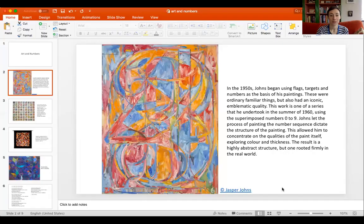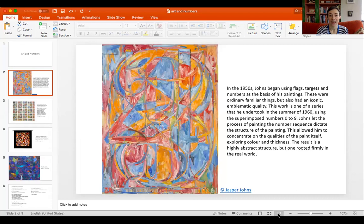I'd like to start off with an artist that a lot of you might be aware of. This is a piece of work by Jasper Johns. He did a series of work in the summer of 1960 using superimposed numbers from zero to nine. Johns let the process of painting the numbered sequence dictate the structure of the painting, allowing him to concentrate on the qualities of the paint itself — exploring color and thickness. The result is a highly abstract structure but one rooted firmly in the real world.